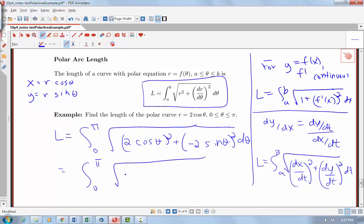We look at what we're going to get under our square root. This will end up being 4 cosine squared theta plus 4 sine squared theta. So we can see how we're going to be able to use a trig identity to simplify the arc length that we're looking at here.